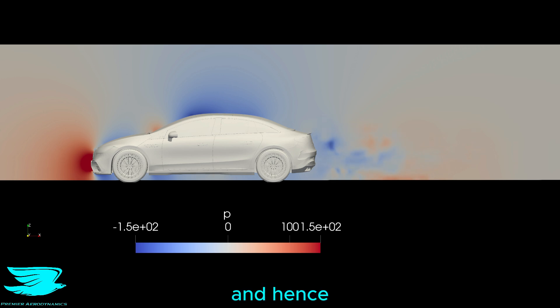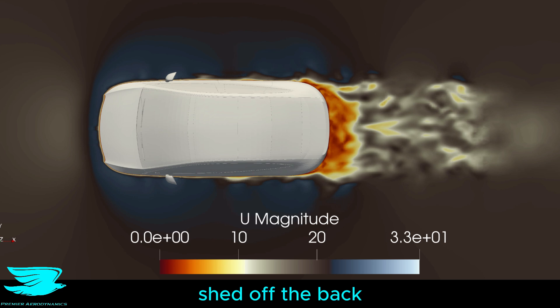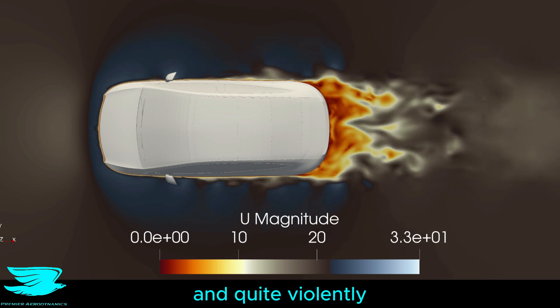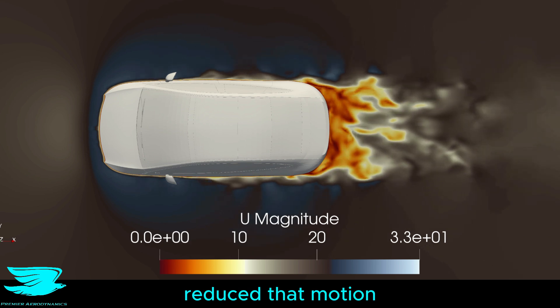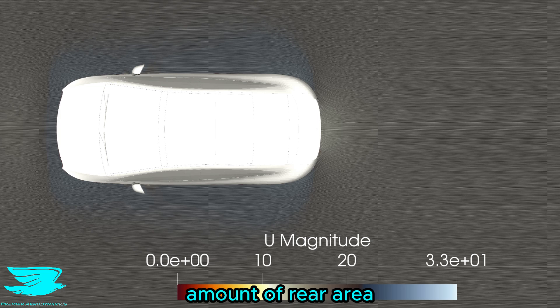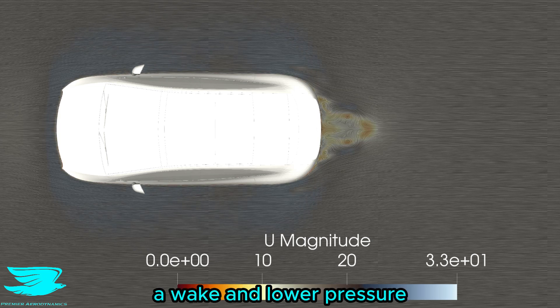Impressively, looking on from the top, the flow that is shed off the back is very steady. In most cars, the wake moves from side to side and quite violently. But Mercedes has greatly reduced that motion, which also reduces the drag because in part, it reduces the amount of rear area that is exposed to a wake and lower pressure.